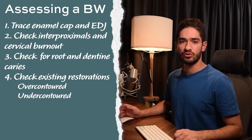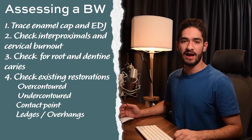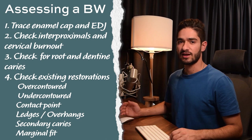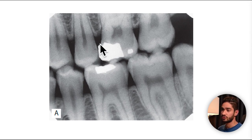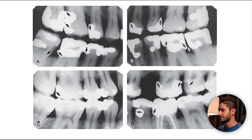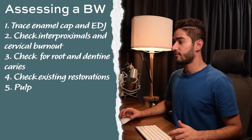Step four is to check for existing restorations. You want to see if they're over-contoured or under-contoured, how they adapt to the adjacent tooth at the contact points, and look for ledges, overhangs, secondary caries, and marginal fits of restorations like crowns. For example, on this one you can see a massive overhang on an amalgam — these can be quite common and important to treat because they're a major plaque trap. On this other radiograph you can see ledges, overhangs, and poorly contoured amalgams, and here you can see the marginal fit of this crown with the ledge right there.